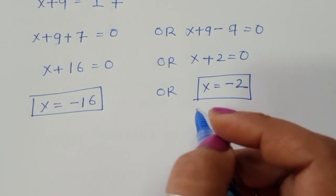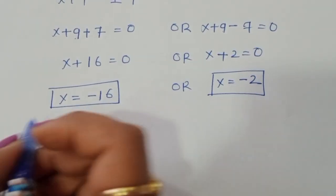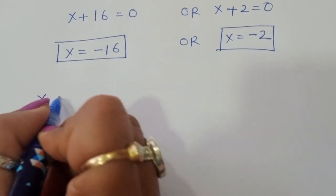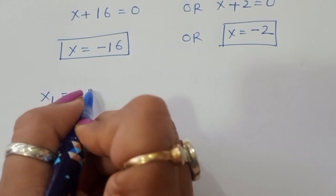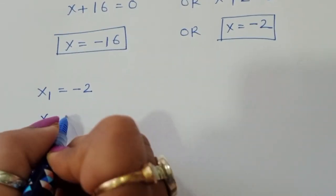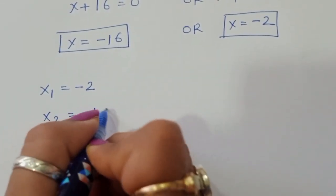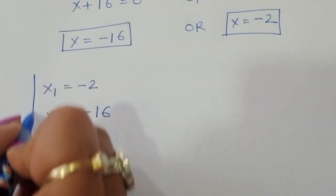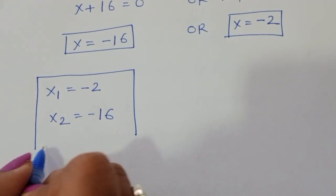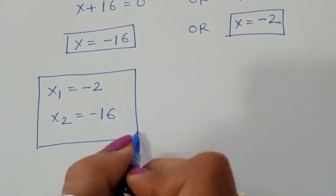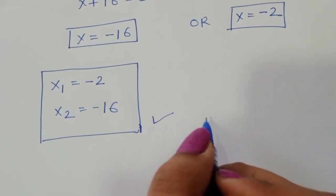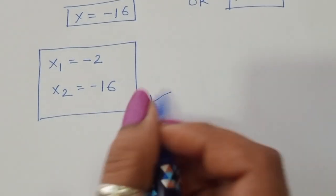From both methods we got the same values of x: x₁ = -2 and x₂ = -16. Now let's verify whether this is correct or not.